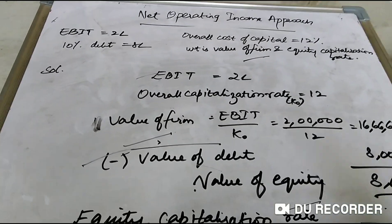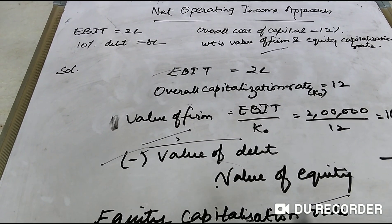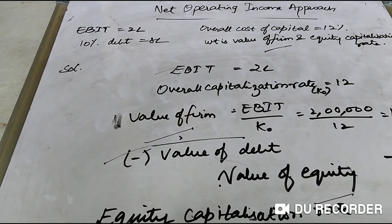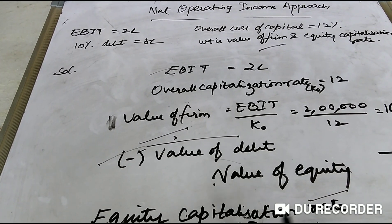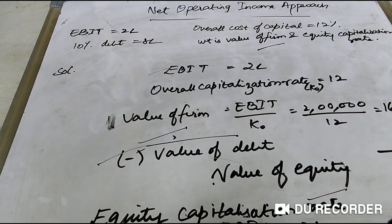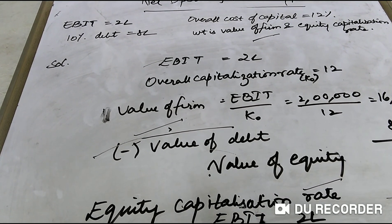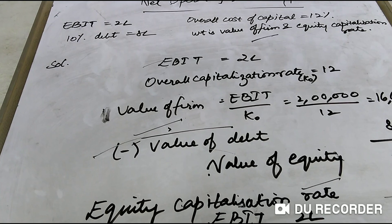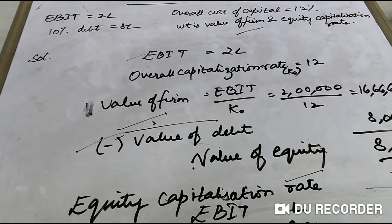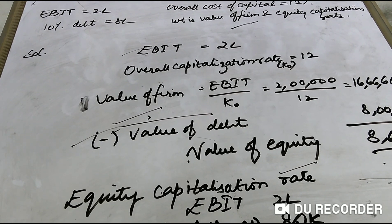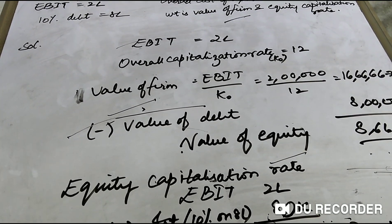In the Net Operating Income approach, they give you EBIT, the percentage of debt, and the value of debt. You are supposed to find the equity value, value of the firm, and equity capitalization rate. The formula to calculate value of the firm is EBIT divided by the overall capitalization rate, then you find equity value and equity capitalization rate.